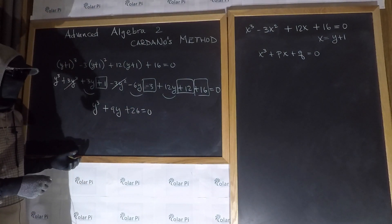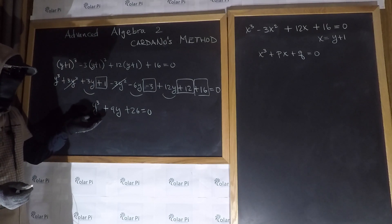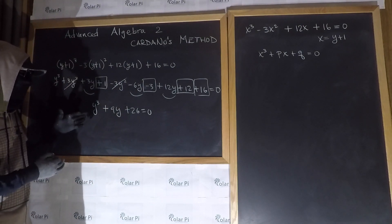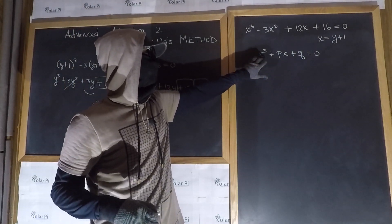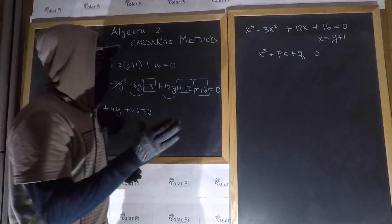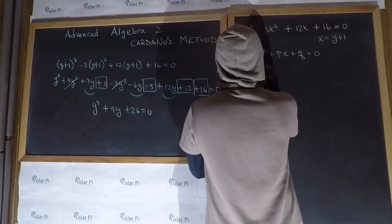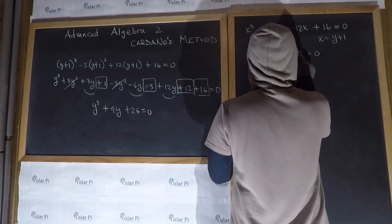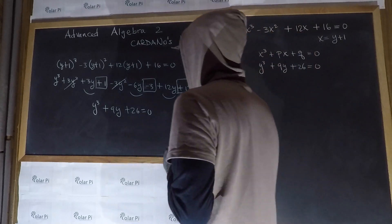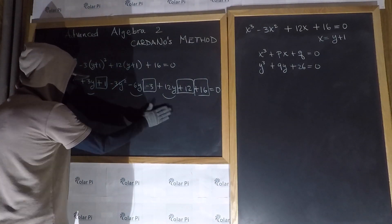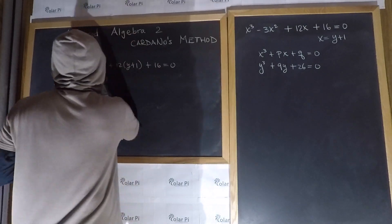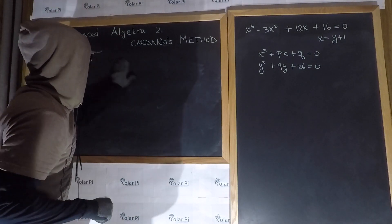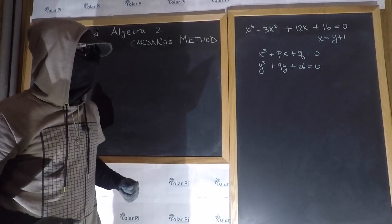Now instead of y we could have used t, so you would have had t³ + 9t + 26 = 0. But the variable change doesn't make a big difference — it's just a variable name change. What I'm saying now is that our depressed cubic is here. We are done with depressing our cubic, and we're going to solve it the rest of the way.